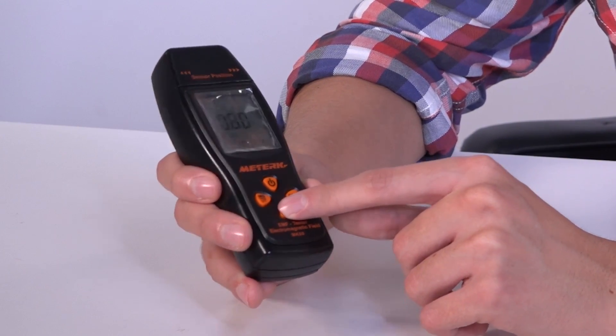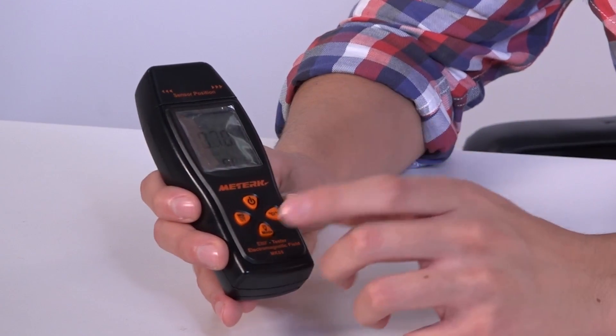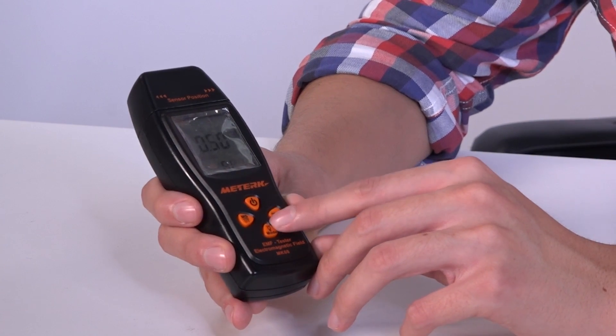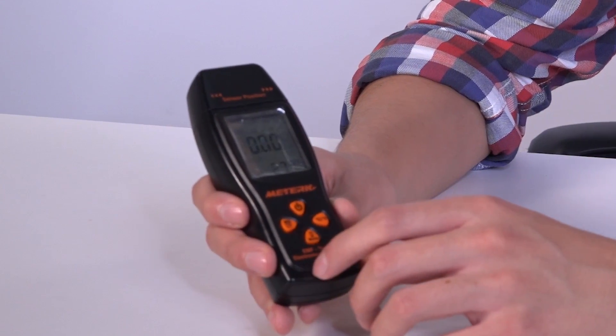So for example, we will leave it at 0.7 micro teslas or a little bit lower even, 0.5. Once it's set we just press this again and it will be set.